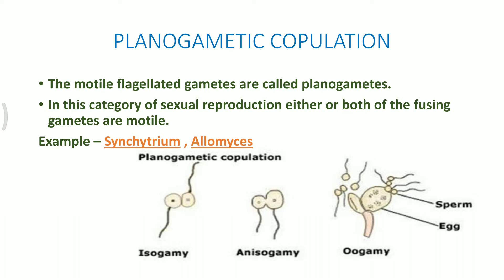The first category is isogamy, where both the gametes are of the same shape and size and are motile. When they both fuse, they form a nucleus and that nucleus is a diploid zygote.